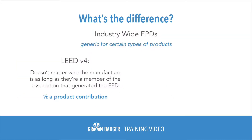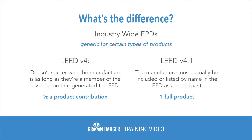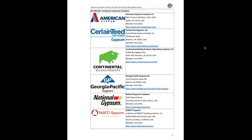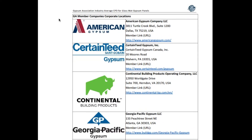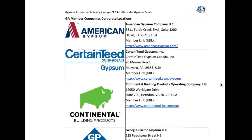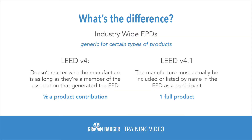Industry-wide EPDs are only worth a half product contribution under version 4. Under version 4.1, it is more stringent — the manufacturer must actually be included or listed by name in the EPD as a participant. You can see an example of that here. These count as one full product under version 4.1.